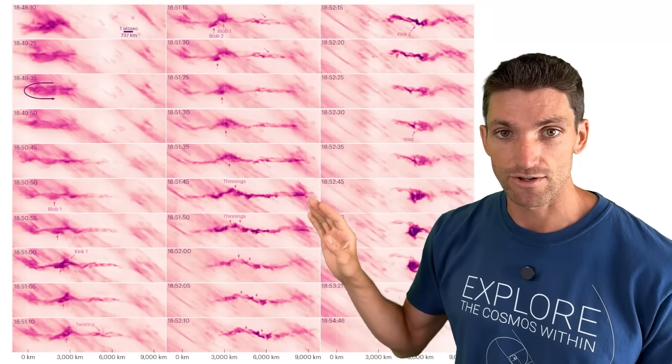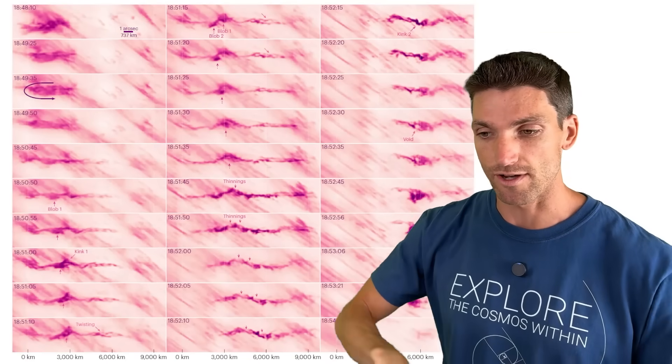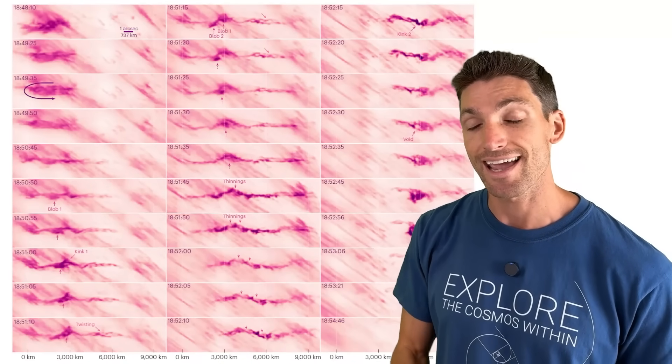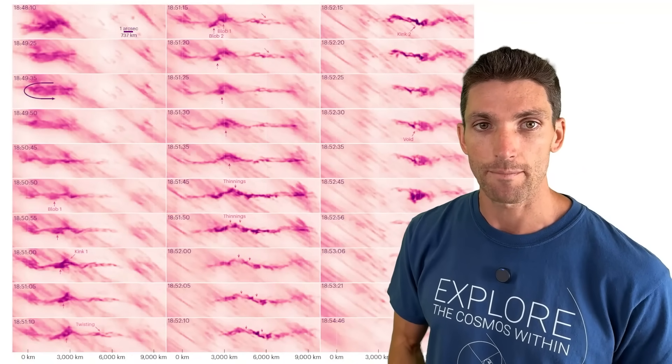And considering the size of this, there are going to be a whole bunch of these plasmoids all across the surface of the sun. And you have to keep in mind, this was observed with our latest high-resolution solar optics.